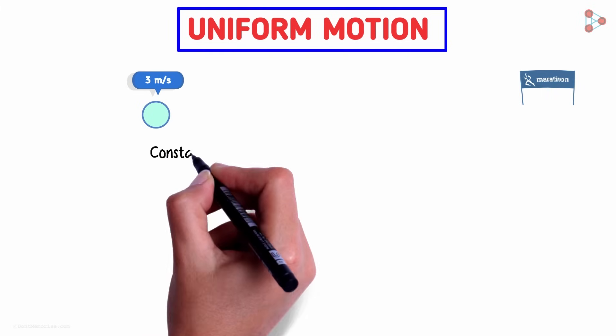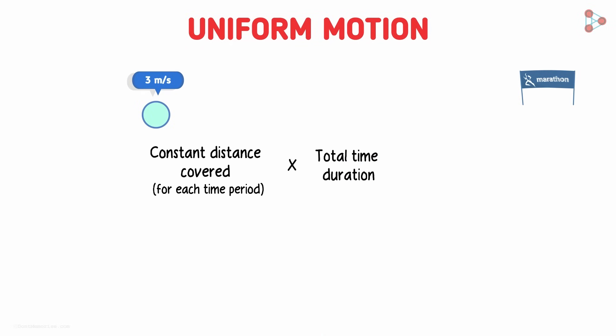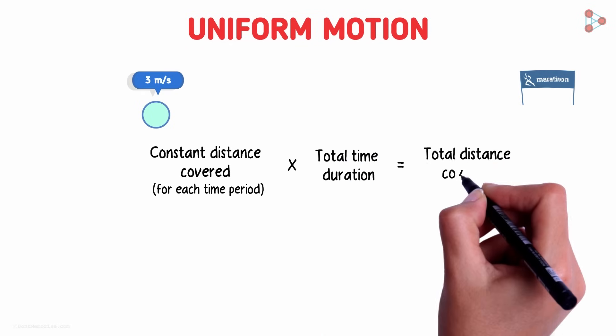This is what we describe as uniform motion. So in case of uniform motion, if we know the constant distance covered for each time period, along with the total time duration of motion, we can calculate the total distance covered.